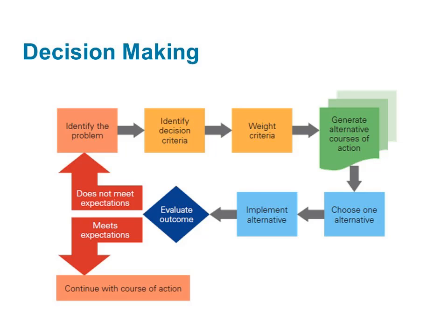Step one of the rational decision-making process is to identify and define the problem. Step two is to identify the decision criteria. Step three is to allocate weights to the criteria — which criteria are most important. Step four is to identify the alternatives, the different options from which to choose. Step five is to evaluate each one of those alternatives. Step six is to select the best alternative and then implement it.